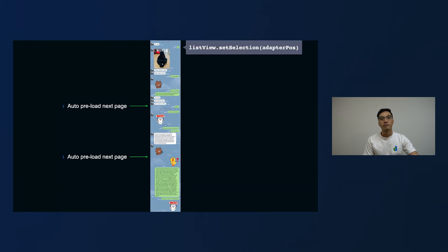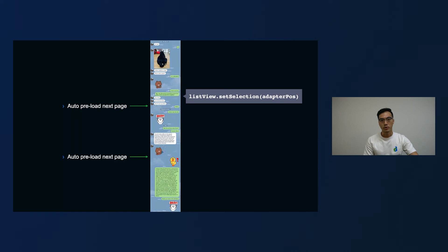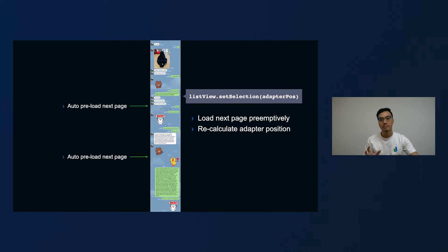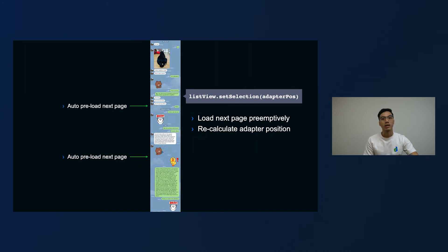So for our feature, in the first step we use setSelection, going from the first message toward the preloading threshold. In order to prevent LINE Android from preparing the next page in the background and swapping pages, we actually have to preemptively load the next page before we hit the threshold. We also have to recalculate the adapter position for the setSelection API before we hit the threshold, so that the view can be shown correctly. So in this step, we focus on those two things to circumvent the mechanism that LINE Android already has.